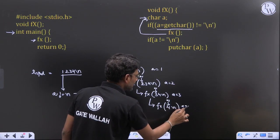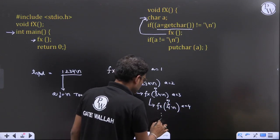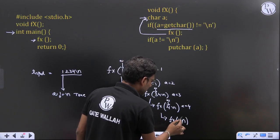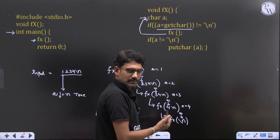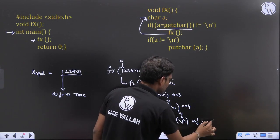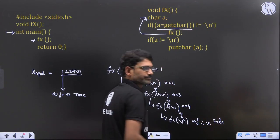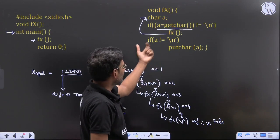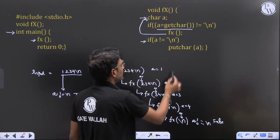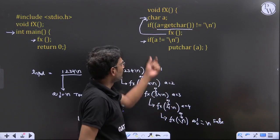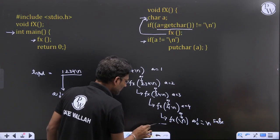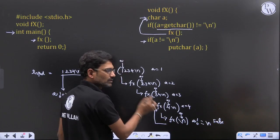So here a is 4, which is not backslash n. Now again the function is called recursively with backslash n as the character. So is a not equal to backslash n? Here the condition is false. If a not equal to backslash n, this condition is also false when backslash n is a. So now the control returns to the previous call.